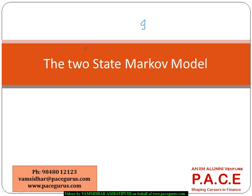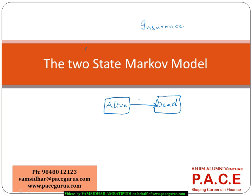In the insurance world, we use a two-state Markov model where there are only two states: alive and dead. When looking at these two states, there is only one transition between them. At some particular point in time, a person who is alive — where x is the age of the person — transitions to the death state.